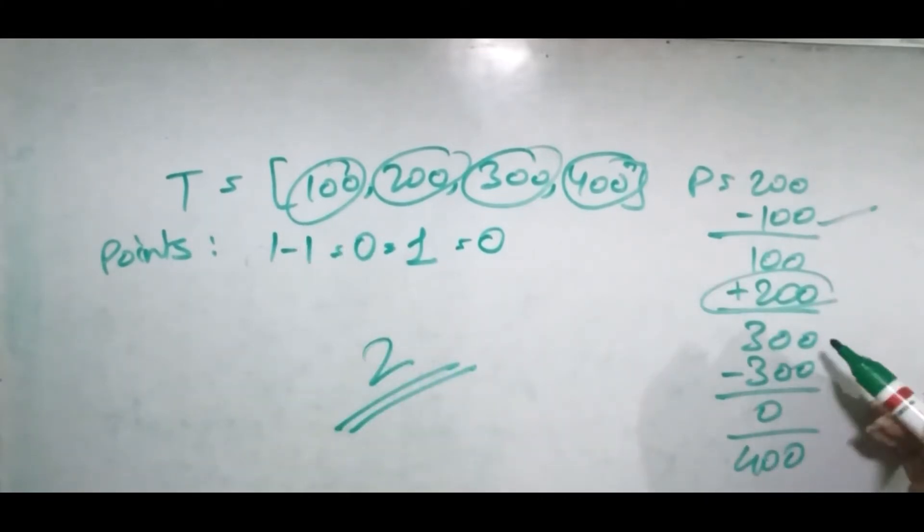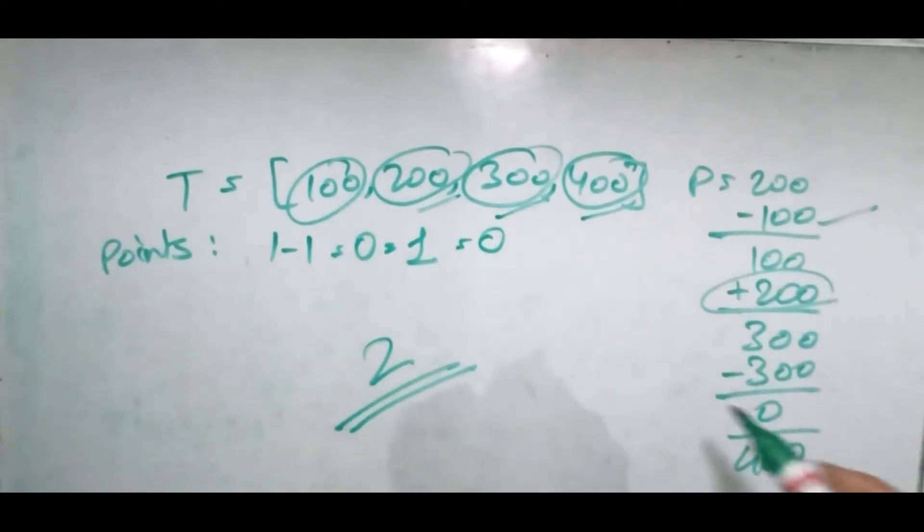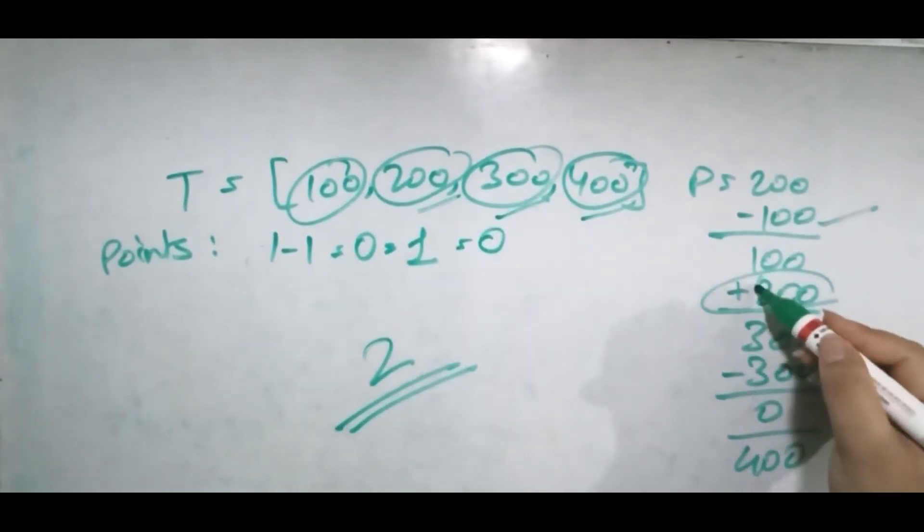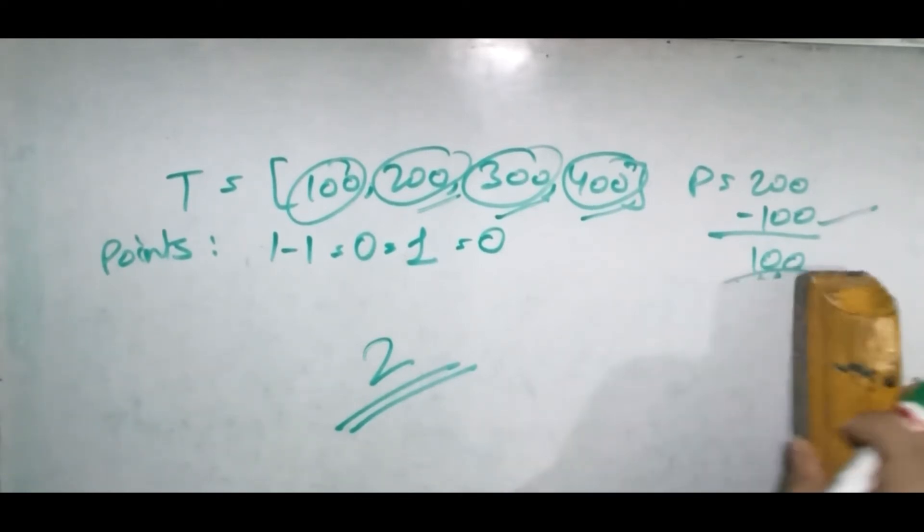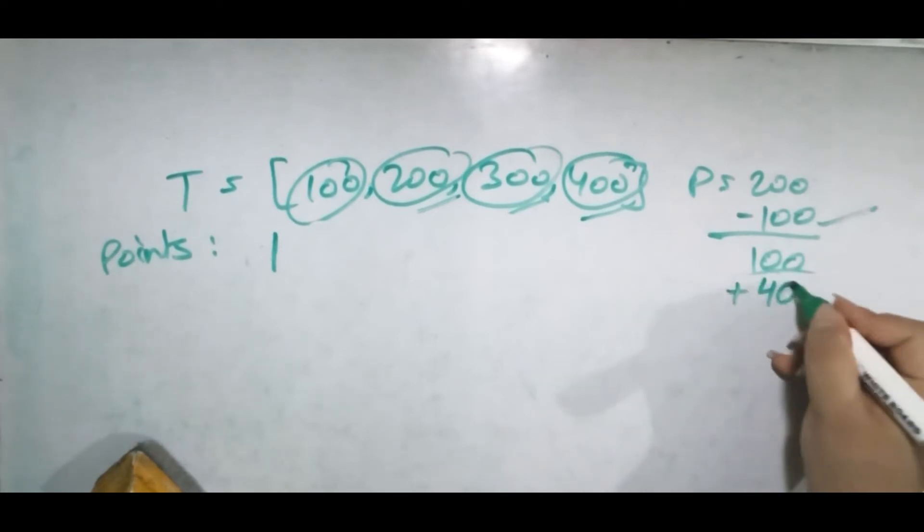We decreased by 100, but when we increase the value, we had the option to increase by 200, 300, or 400. So what if we increase by 400 here? Let's go back. Now we increase it by 400 here.